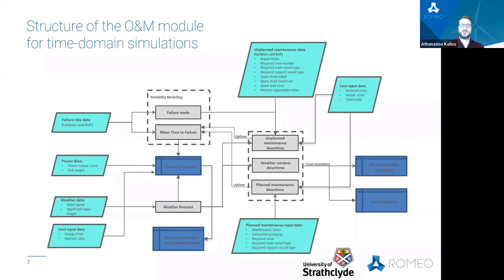The maintenance module covers planned and unplanned maintenance activities, and takes into account the actual duration of all stages required to perform the repair and maintenance operations, using vessel and crew day rates, along with material costs, to estimate the total O&M costs. Other outputs of the model are the time-based and production-based availability in the power production process.